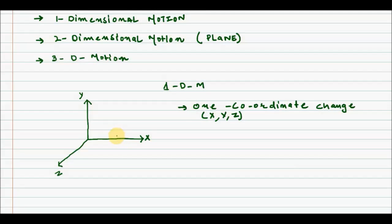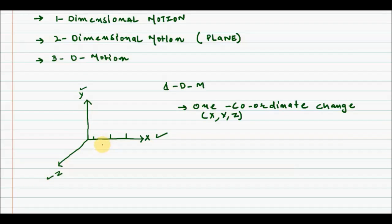For example, suppose I am standing at a position along the x-axis, and as time passes I move along that axis. What is happening is that only my x coordinate is changing, while my y and z coordinates remain the same. This is an example of one dimensional motion. Rectilinear motion and linear motion are examples of one dimensional motion.